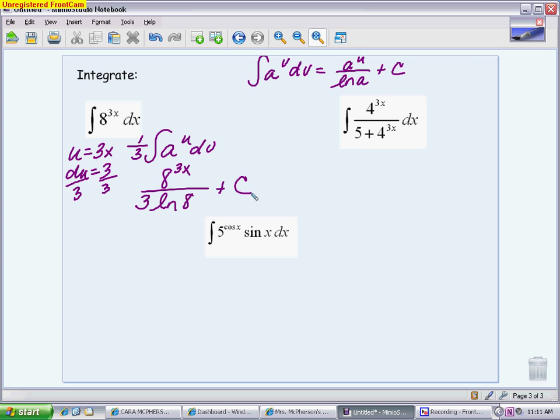The second one has an a to the u piece in it, but it's actually not that form. If you choose your u for this one, you want the u to be the entire denominator. The derivative of this is, the derivative of 4 to the 3x is 4 to the 3x times 3 times the natural log of 4. The adjustment here is actually to divide by 3 natural log of 4, which is strange because we're used to not having logarithms in our adjustment, but remember, it is still just a constant. So when I write my adjustment piece in front of my parentheses, I'm going to write 1 over 3 natural log of 4.